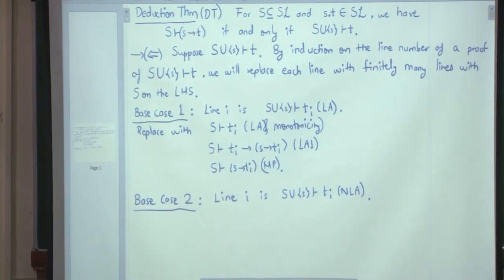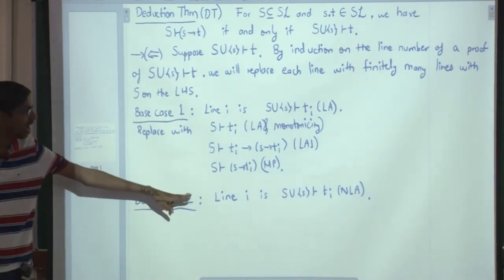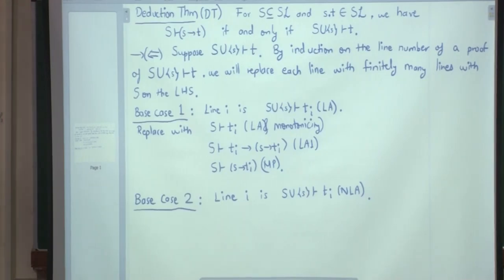Now, let us consider base case 2 that line i has T_i as the right hand side and the reason is NLA. Now, what could happen? Tell me, if the reason is NLA,